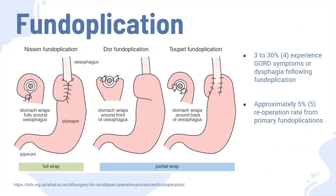Fundoplication is one of the ways that we can permanently treat GORD. It's a technique that involves wrapping the fundus of the stomach around the lower esophageal sphincter, which reinforces the weak sphincter pressure and prevents the reflux of stomach contents back into the esophagus, essentially permanently preventing the reflux.